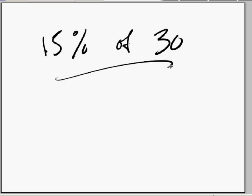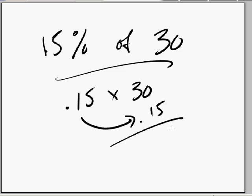Now, 15% of 30 is pretty straightforward. What you do is multiply 0.15 times 30, or what we usually do is put it underneath and multiply it out.